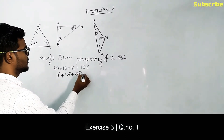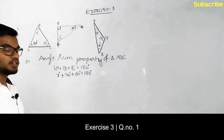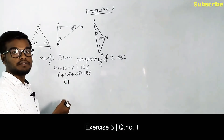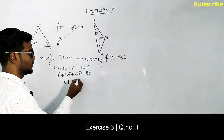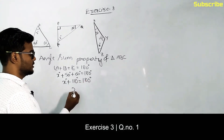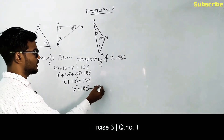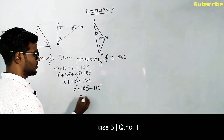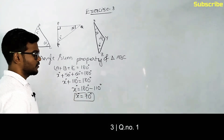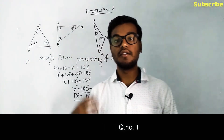Here angle A is X degrees, angle B is 50 degrees, and angle C is 60 degrees, so their sum equals 180 degrees. X plus 50 plus 60 equals 110 degrees, which equals 180 degrees. Therefore X is equal to 180 minus 110, which gives us 70 degrees.